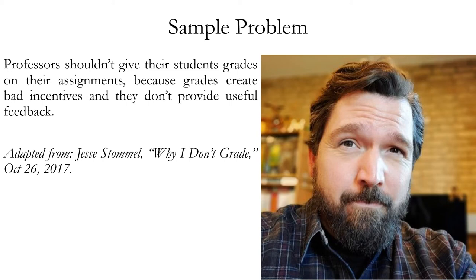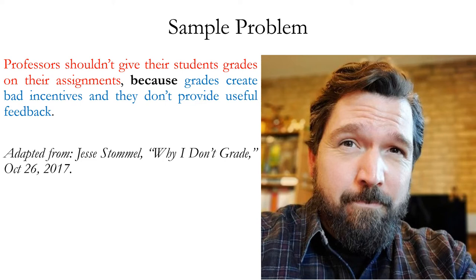Another sample problem: 'Professors shouldn't give their students grades on their assignments because grades create bad incentives and they don't provide useful feedback.' We start by looking for indicator words — 'because' is a premise indicator, so the propositions that follow, 'grades create bad incentives' and 'they don't provide useful feedback,' are premises. The conclusion is the first clause: 'Professors shouldn't give their students grades on their assignments.' This is a case where the whole argument appears in one grammatical sentence, with different clauses for the conclusion and the premises, separated by a comma. This was adapted from Jesse Stommel's article 'Why I Don't Grade.'